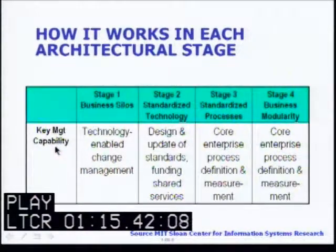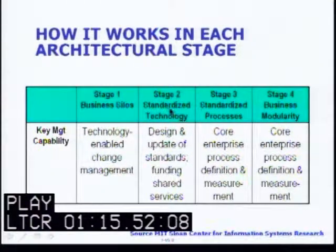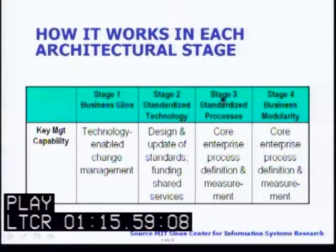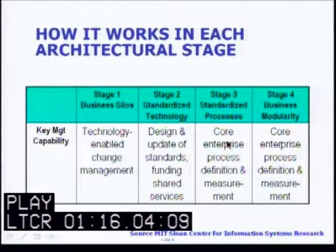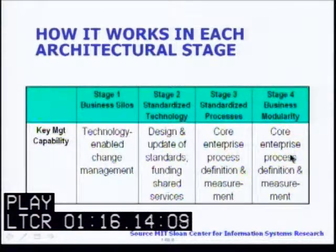Key management capability: stage one, business silos, looks at technology-enabled change management; stage two, standardized technology, looks at design and update of standards and funding of shared services; stage three, standardized processes, looks at core enterprise process definition and measurement; and stage four, business modularity, also looks at core enterprise process definition and measurement.